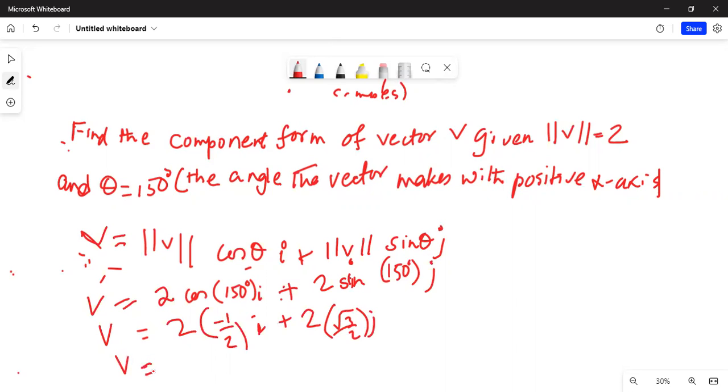Hence, vector v is equal to minus 2 and 2 cancels.